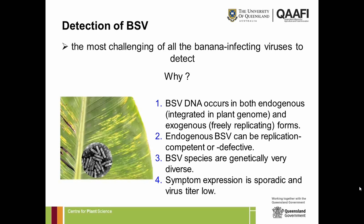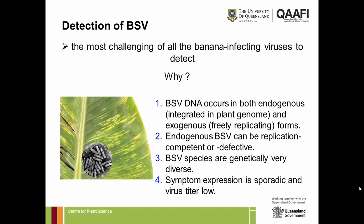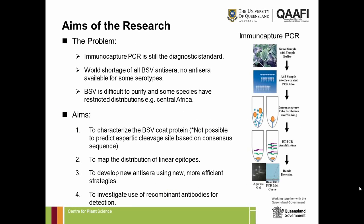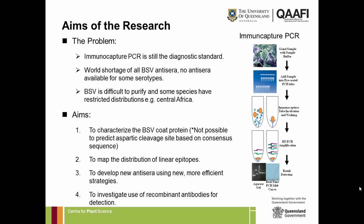The other detection challenges include 10 or more BSV species requiring broad or parallel diagnostic assays, sporadic symptom expression, and very low virus titer. When Jenny started her PhD, we were using immunocapture PCR — using antibodies to capture virus particles to the PCR tube, washing away sap components, and undertaking PCR on the trapped virus particles. This allows you to distinguish between DNA molecules in a virus particle and those in the host genome.